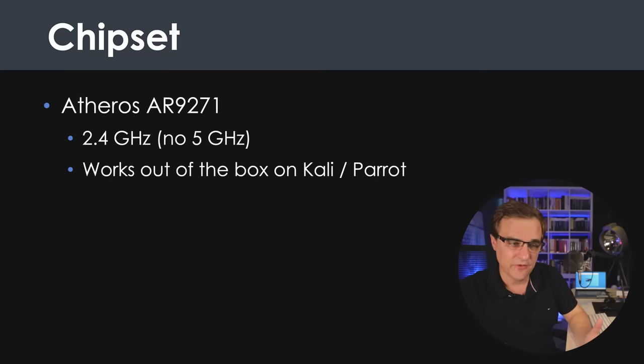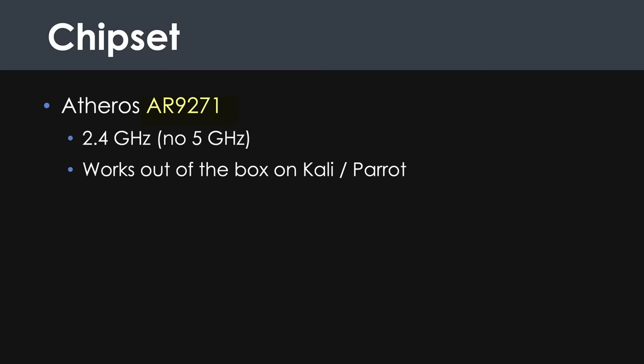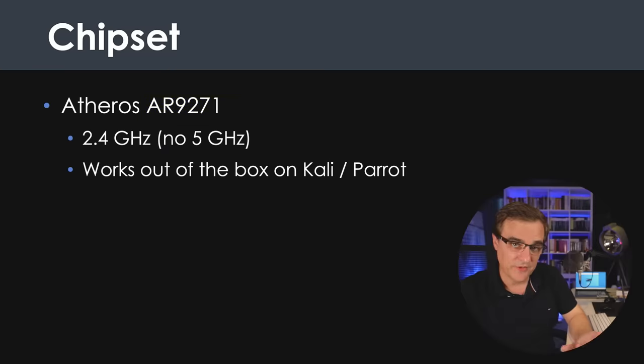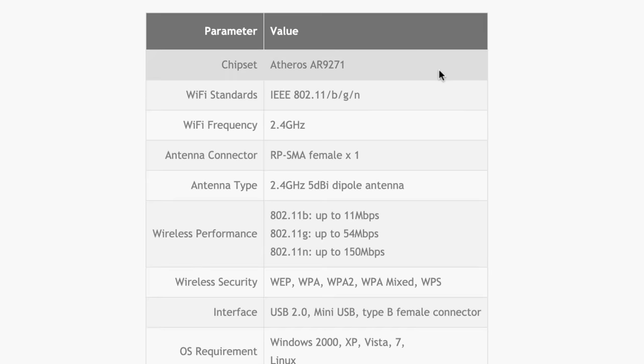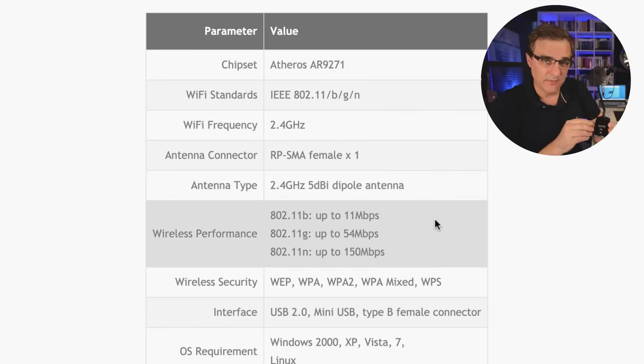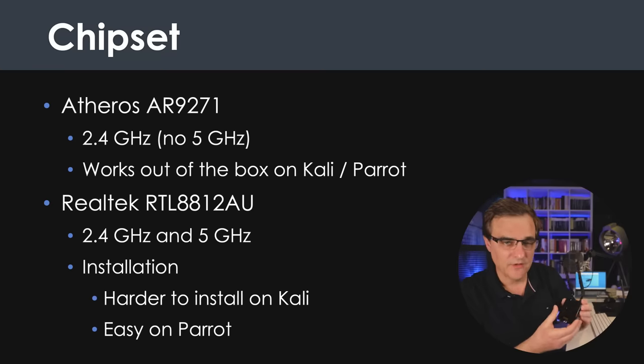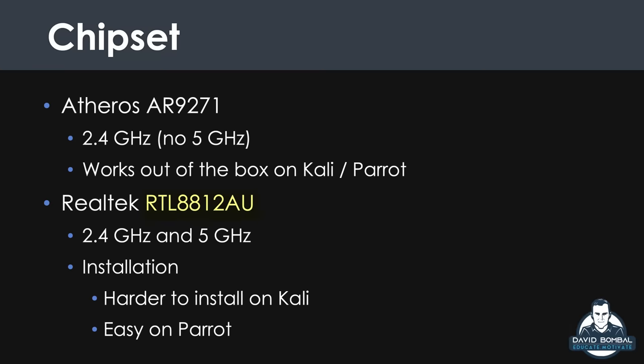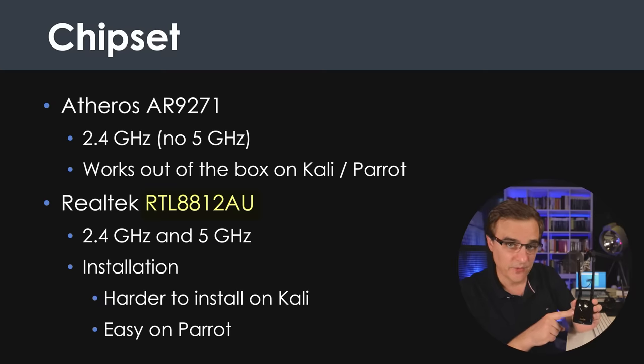Before going further, you need to ask which chipset the Wi-Fi adapter uses. I'll concentrate on two important ones. The first is the Atheros AR9271 — this chipset doesn't support 5 GHz, only 2.4 GHz. So don't look at the brand of a Wi-Fi adapter, look at the chipset. The next important chipset is the Realtek RTL8812AU — that chipset supports 5 GHz as well as 2.4 GHz.